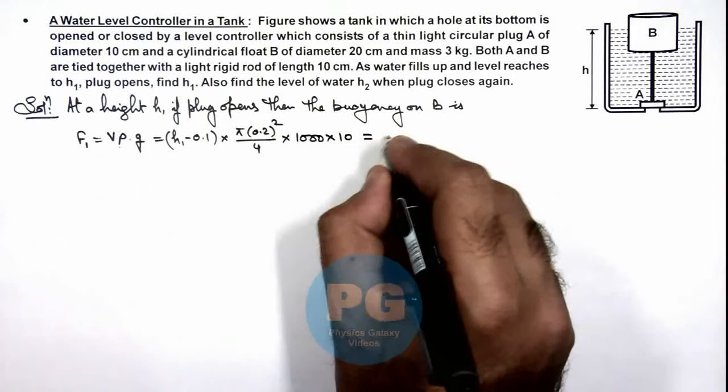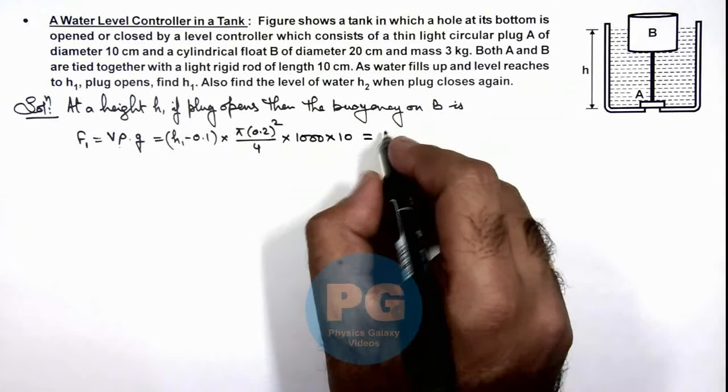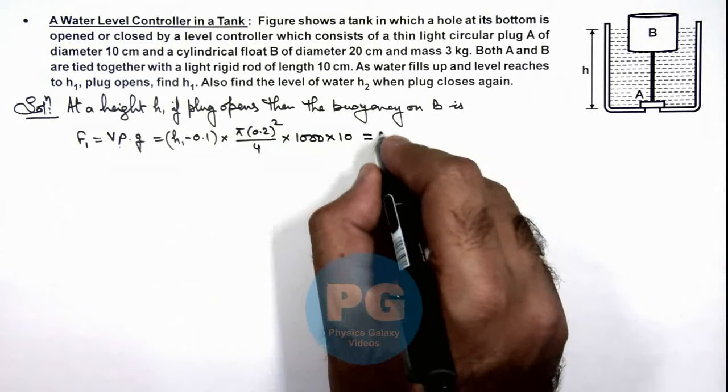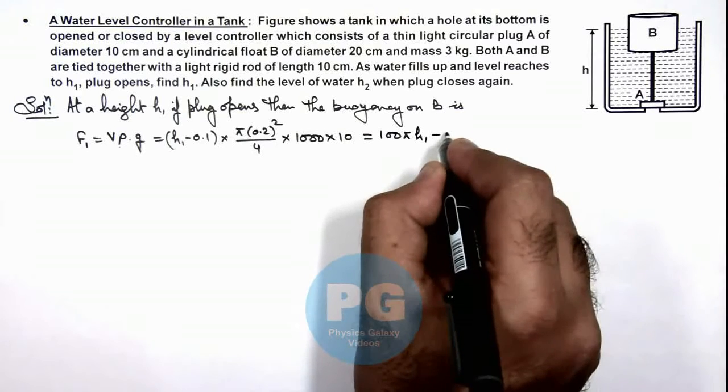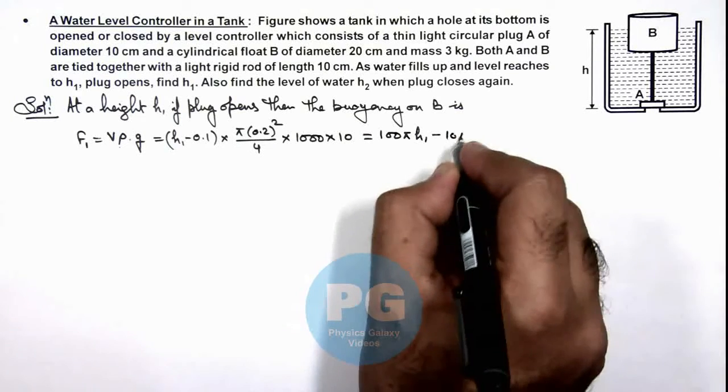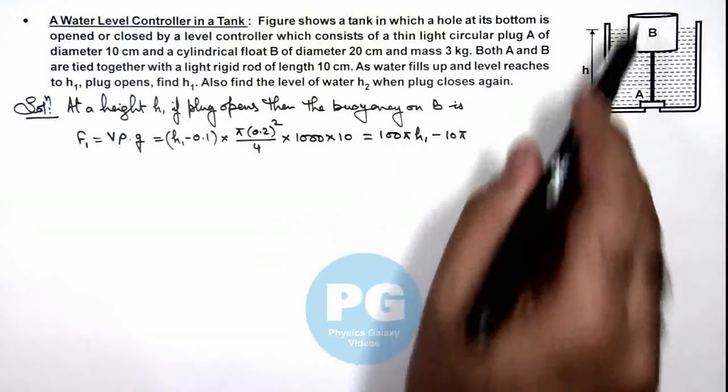The numerical value here is 100π h₁ minus 10π. This is the value of upward force acting on block B.